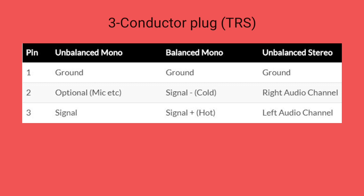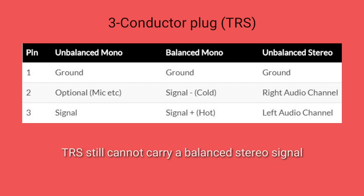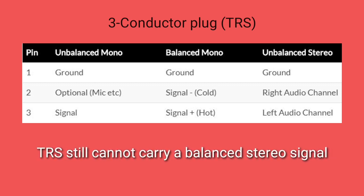Whereas in stereo, the first conductor is used for ground, the second for right audio signal, and the third for left audio signal. However, TRS still cannot carry a balanced stereo signal.